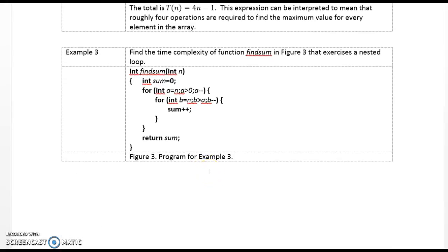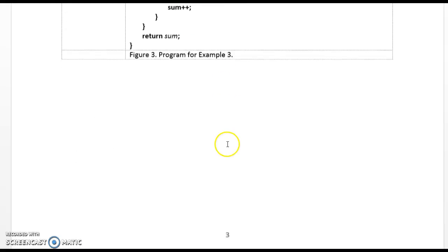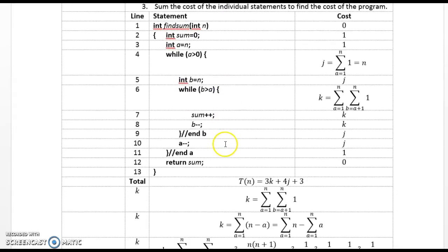Example 3, find the time complexity of find sum in figure 3 that exercises a nested loop. So I've called it find sum, it has an integer value n, and we have an a loop, and inside the a loop we have a b loop. Notice that the b loop starts out at n, and is decremented one each time until it gets just above a. So when we come over here to evaluate our find sum, we've changed our for loops into while loops, so we can analyze this. When 0 is assigned to sum, we count the cost of the assignment 1.